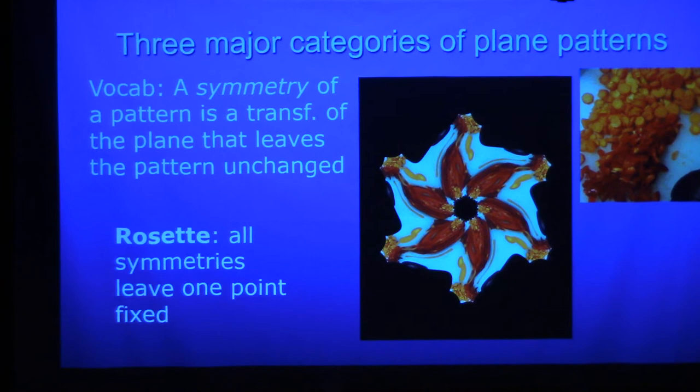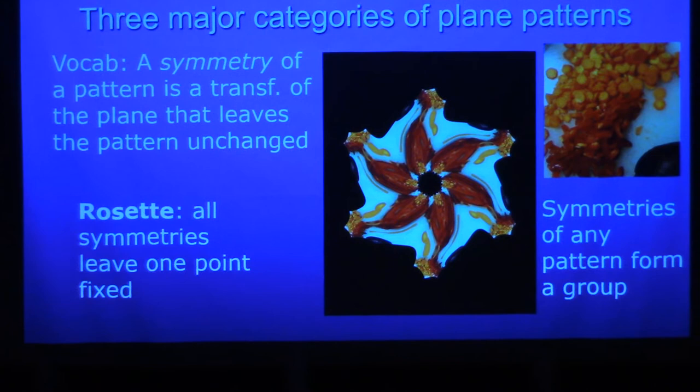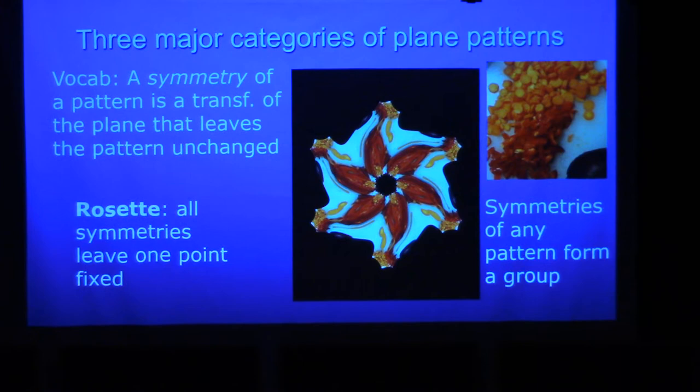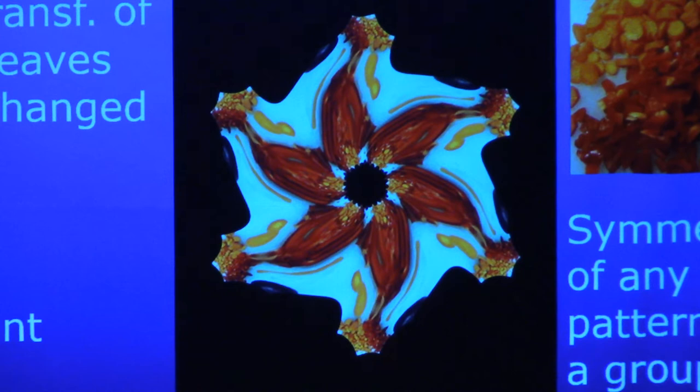I'm going to try to soft pedal the algebra side. This is an analysis group, but I do have to say that the symmetries of any pattern form a group. Now, if you don't know what a group is, this is the first best example for you to think about. A group is a set that is closed under a certain operation. Here, the set is these transformations that leave the pattern the same. What is the operation? It's composition of those.